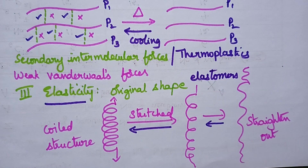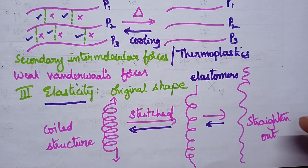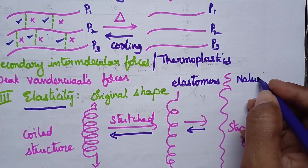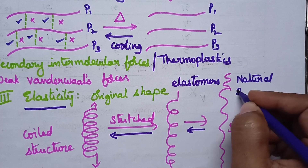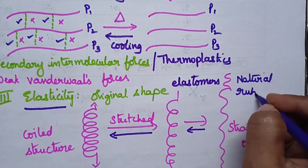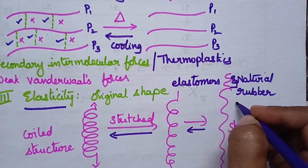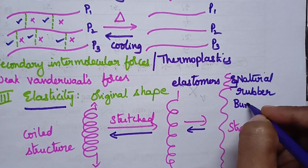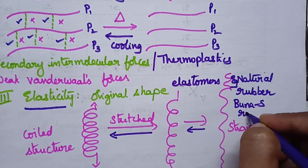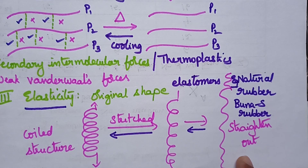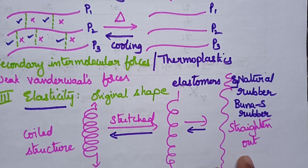Good examples of elastomers include natural rubber and Buna-S rubber. These all exhibit elasticity. This concludes the discussion on the mechanical properties of polymers.